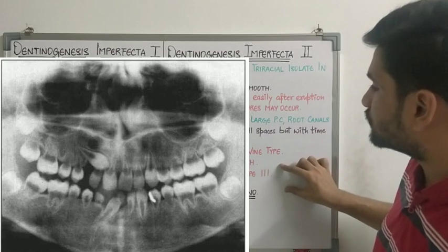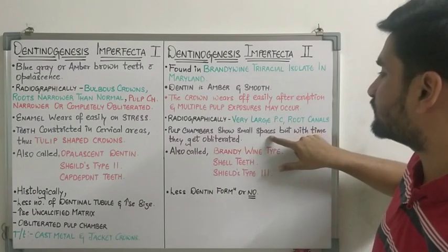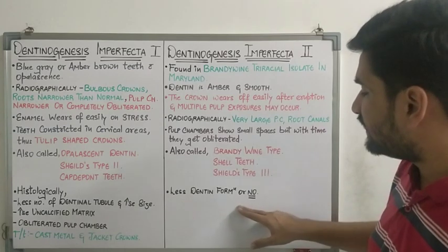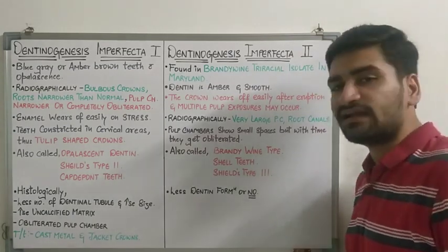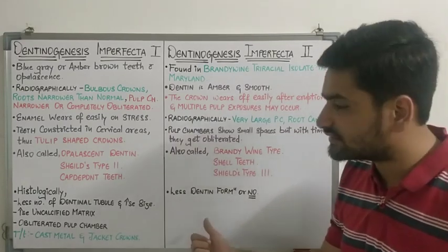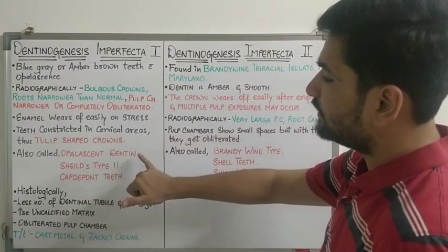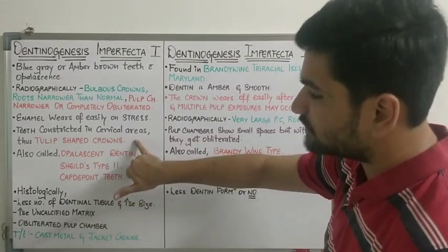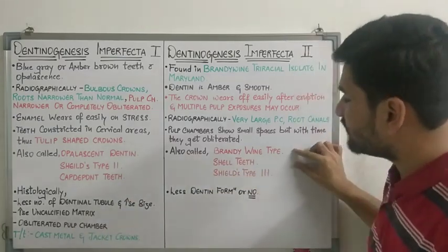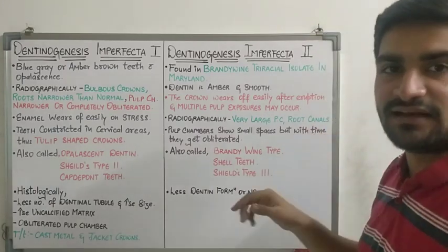Radiographically, very large pulp chambers and root canals are seen because there is less overall dentin formation, so the pulp chambers and root canals appear very large. The teeth are known as shell teeth because there is no dentin present - the appearance will be like a shell. It is also known as Brandywine type or Shields type 3. The pulp chambers may sometimes show small spaces but can also get obliterated. There is less or no dentin formation seen in dentinogenesis imperfecta type 2. Histological features and treatment remain the same as DI1.